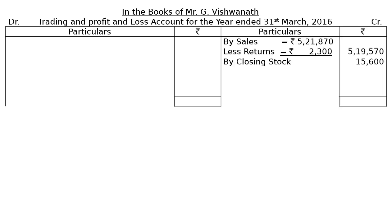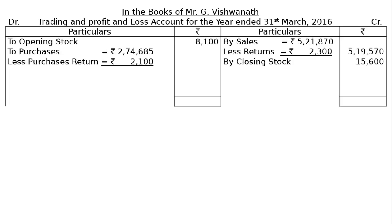Then by closing stock Rs. 15,600. Next, to opening stock Rs. 8,100. Then to purchases Rs. 2,74,685 less purchases return Rs. 2,100. After deducting this, we can show in the final column Rs. 2,72,585.